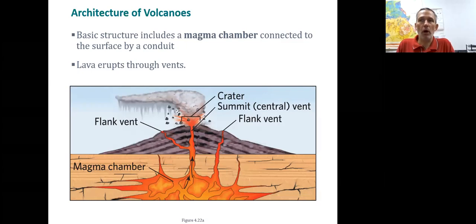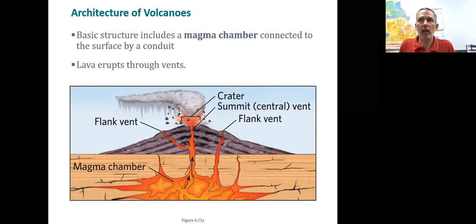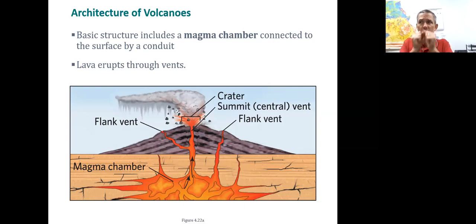Every volcano is going to have a magma chamber — a blob of magma that is the source of molten material that will eventually create the volcano. The magma leaves this chamber and starts rising near the surface. If it erupts near the surface, we call this a vent. When this vent occurs, it blasts material out and leaves behind a crater. The lava finds the path of least resistance — if it's easier to get out the side, it vents out the side, which we call a flank vent.